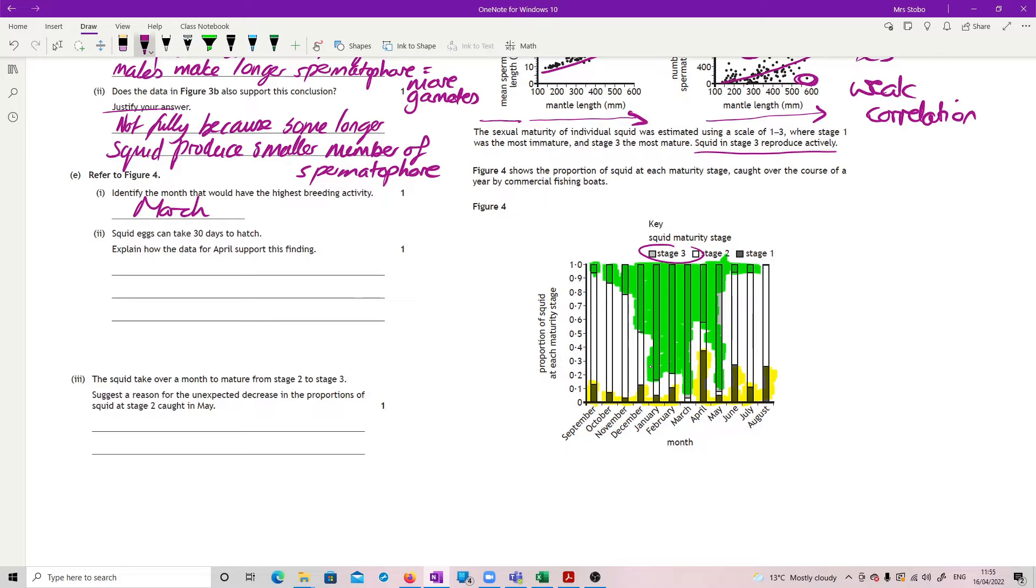Squid eggs can take 30 days to hatch. Explain how the data for April supports this finding. Well, 30 days. So April is 30 days after the greatest breeding activity. So the eggs from that will have hatched. And if you look, because if you look at April, you've now got a big chunk of stage one, which are your youngest ones.